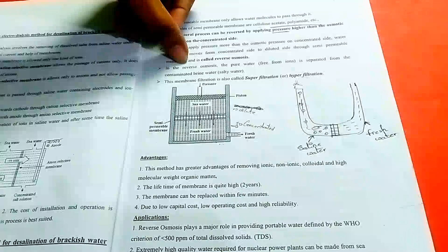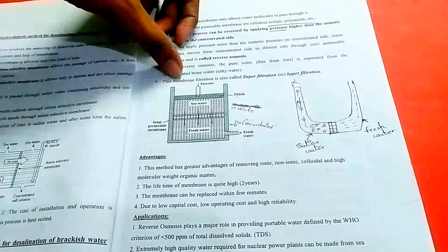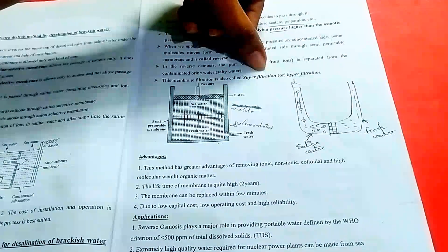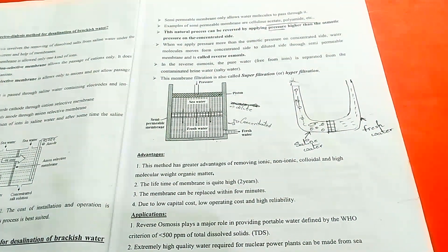In reverse osmosis, the pure water is separated from the saline water. This membrane filtration is called super filtration or hyper filtration.